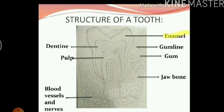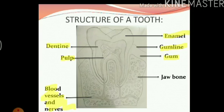You can see I have used a yellow highlighter to highlight the name that I am reading. Next we have the gum line, which marks the outline of the gum. Then below that we have the gum. Inside the teeth, below the enamel, we have the dentine, and inside the dentine we have pulp. This pulp is made of blood vessels and nerves, and this tooth is fixed in the jaw bone. These are the different parts of our tooth.